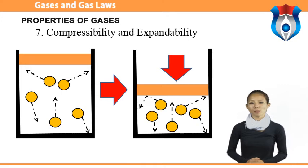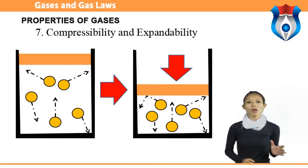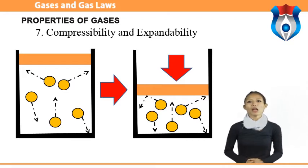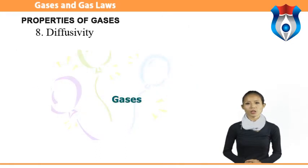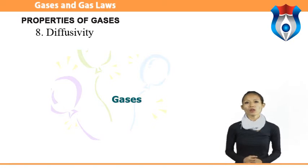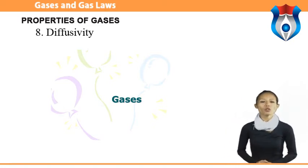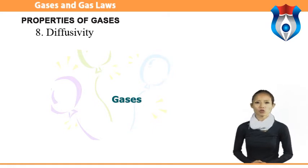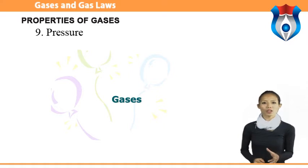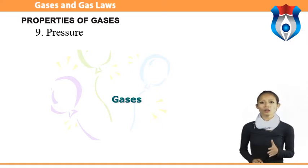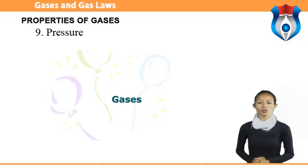Compressibility and expandability: the low density of gases makes them compressible since their molecules can be positioned far apart from one another. Diffusivity: given the large amounts of space between gas molecules, two or more gases can mix quickly and easily with one another to form a homogeneous mixture — this is diffusion. Pressure: gases are in constant motion and exert pressure, or force per unit area, on the interior surface of the container.